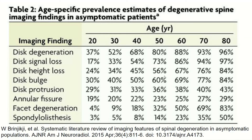Disc protrusion is a little less common — about a third of people have them pretty much across the board, getting a little more common as you get into your 60s, 70s, and 80s. But for the most part, about a third of people without any problems have that. So don't get too worried by the findings on your MRI — that's probably the take-home point.